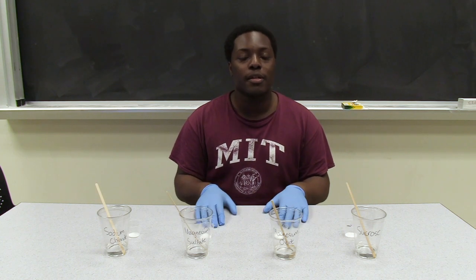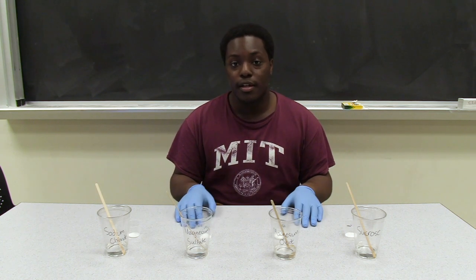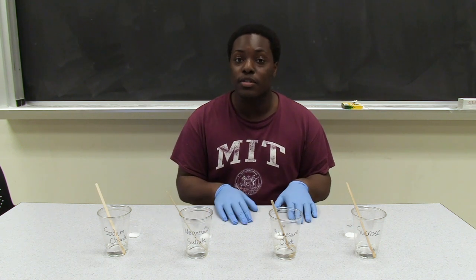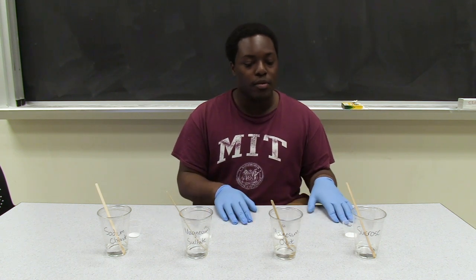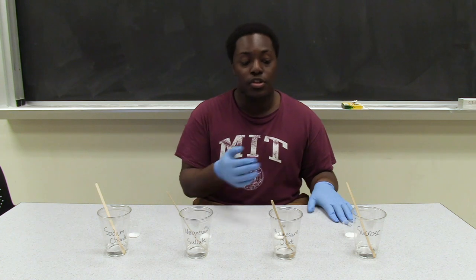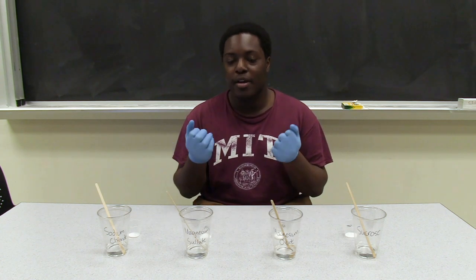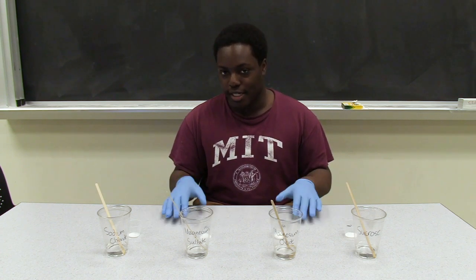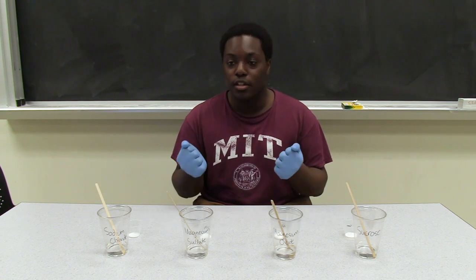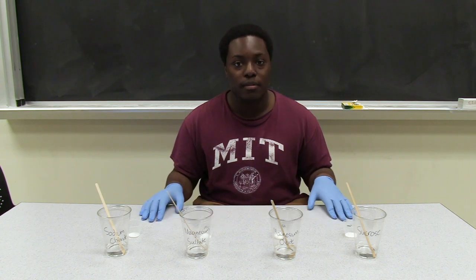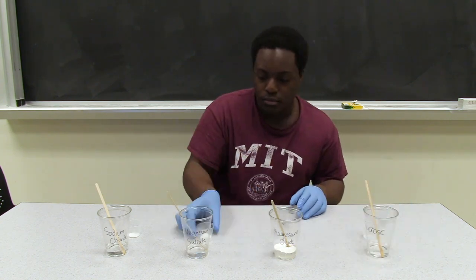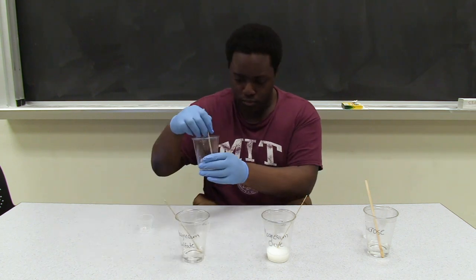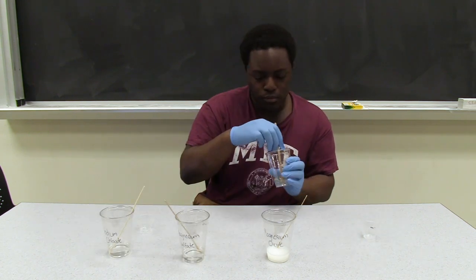First we're going to look at the solubility of our solids in water. To do this, we're going to dissolve one gram of each solid in 30 milliliters of water. I've already weighed out my solids and my water. Notice how I'm wearing a pair of nitrile gloves. The compounds I'm working with today aren't that dangerous, but it's good to wear gloves when handling compounds. I'm going to pour each solute into each respective cup of water and stir and mix for about one to two minutes to see if the compound dissolves.